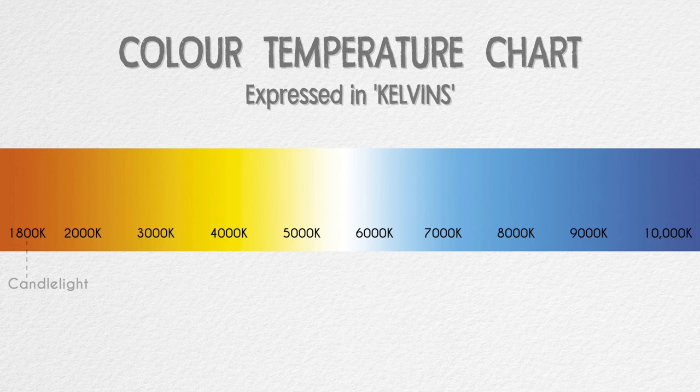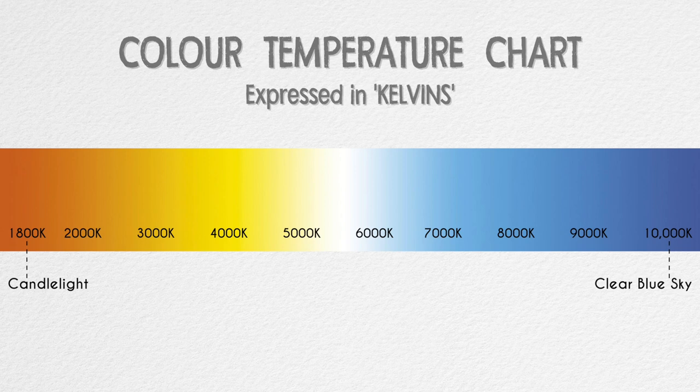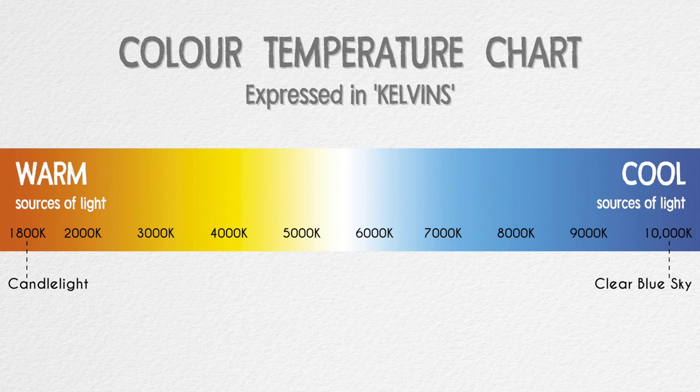Before we understand how to properly white balance an image, let's understand what color temperature is. Here's a skeletal color temperature chart. On the far left is candlelight at approximately 1800 Kelvin, and on the far right is a clear blue sky at approximately 10,000 Kelvin. Anything beyond this and we go into the infrared and ultraviolet sources of light. The range to the left contains warm sources of light, and the range to the right contains cool sources of light. Remember, yellow light is warm and blue light is cool.